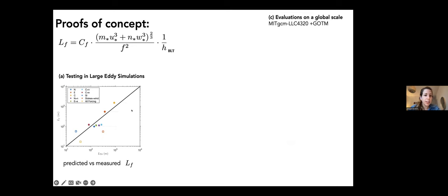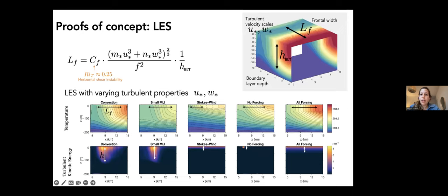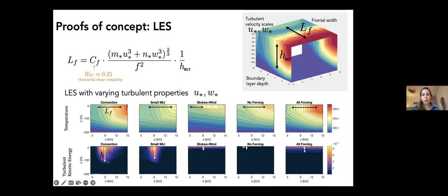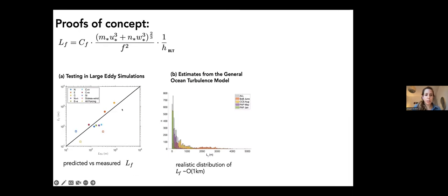The first step was testing in large eddy simulations — very high resolution process models where we can resolve both boundary layer turbulence and the larger sub-mesoscale flow, making them the perfect test bed. We ran a suite of different cases with convection, winds and waves, or smaller eddies, measuring in each case how wide the front gets, how deep the boundary layer turbulence is, and what the different forcing parameters are. We then produced a log-log plot comparing predicted versus measured frontal width, and found a relatively nice result — especially for simulations not specifically designed for this purpose — indicating our scaling isn't unreasonable.